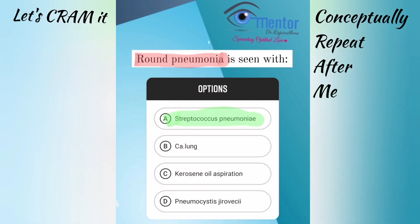Question number 2: Round pneumonia. Round pneumonia is caused by Streptococcus pneumoniae. It is due to the absence of collateral air drift. It looks like a tumour mass and is a differential diagnosis when you see masses in the lung, especially in children.